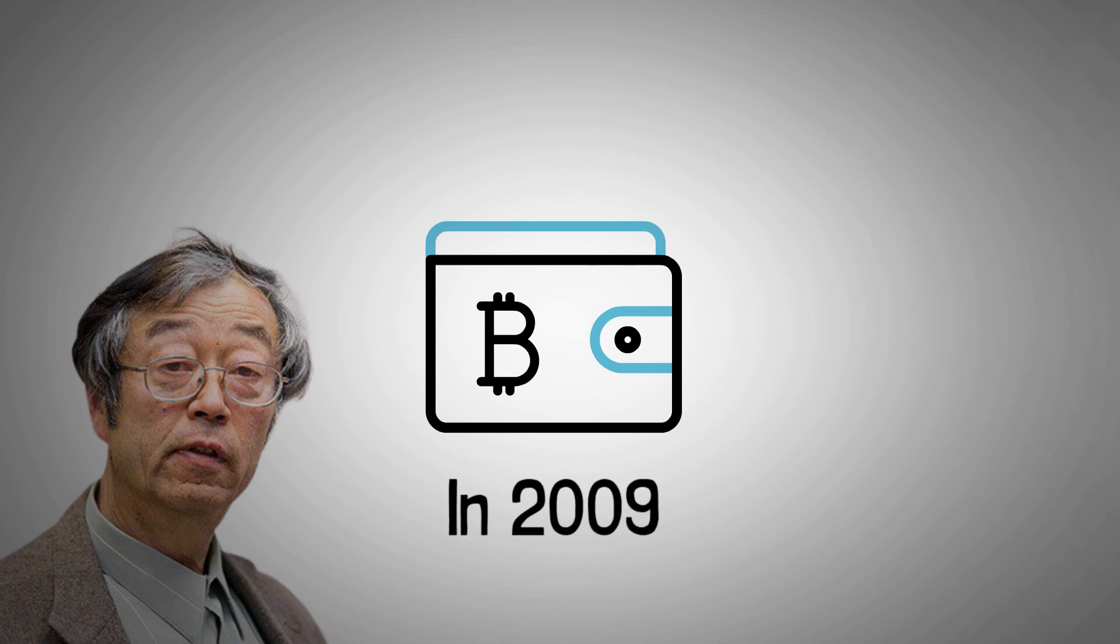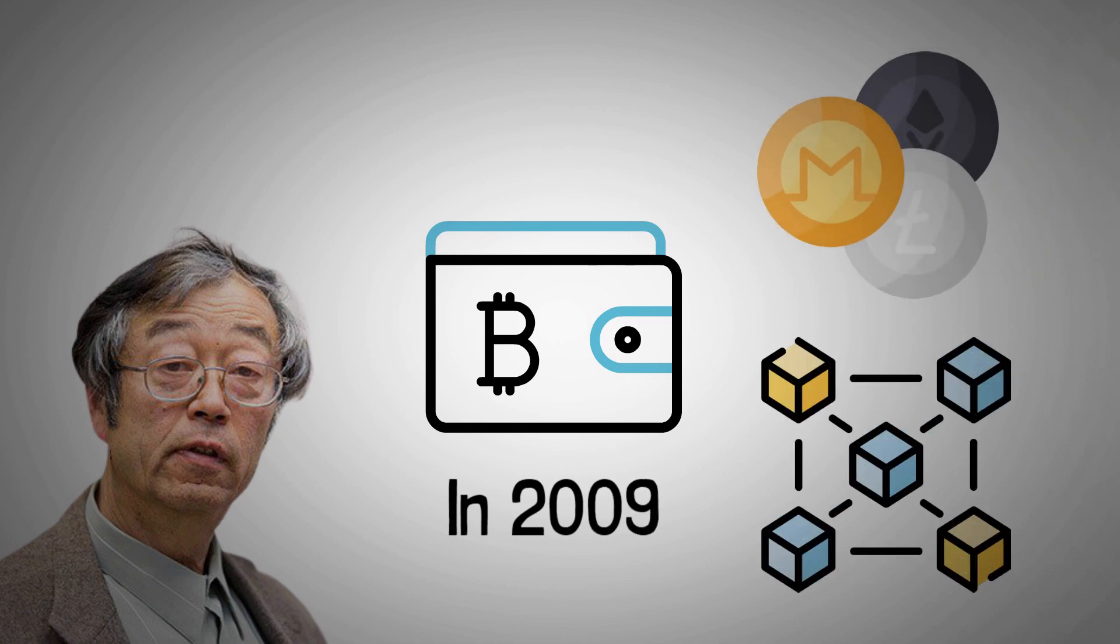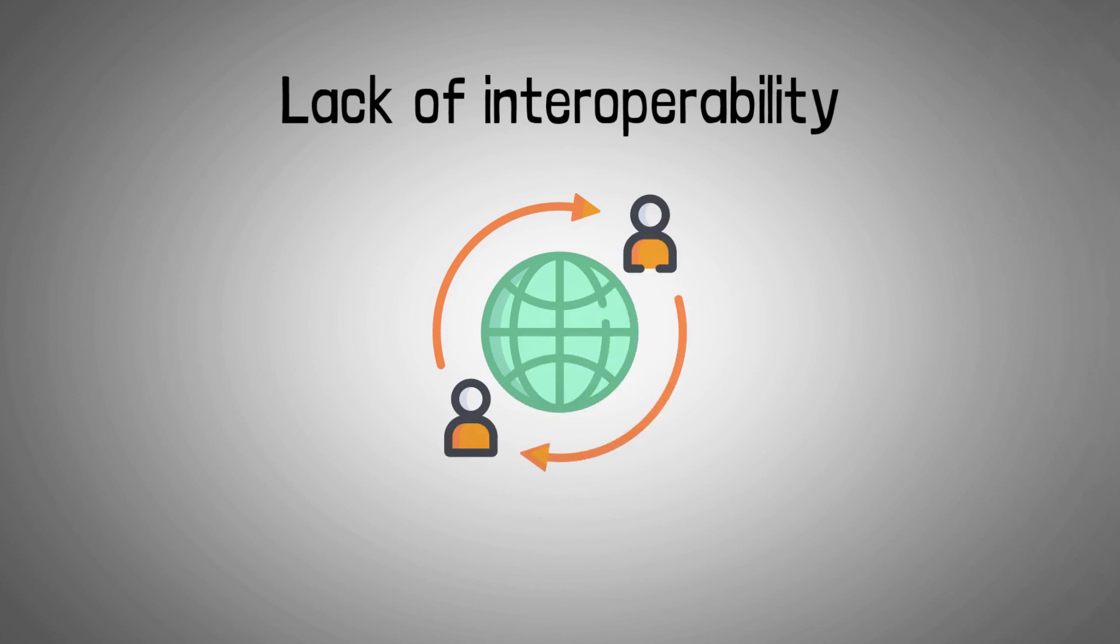Since the creation of Bitcoin in 2009, tens of thousands of other coins have emerged and each one of them relies on blockchain technology. Those blockchain structures, although they have seen tremendous progress, still remain plagued with a few serious issues, one of which is the lack of interoperability. This refers to the capability of making connections and establishing communications between computerized systems.